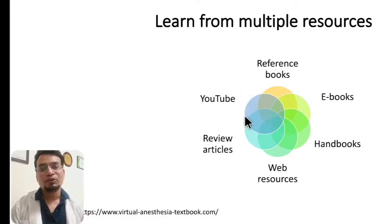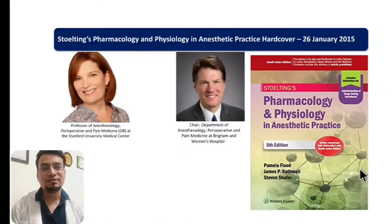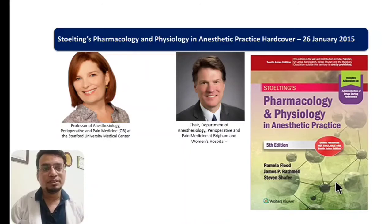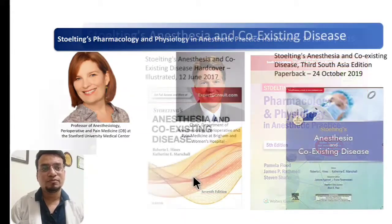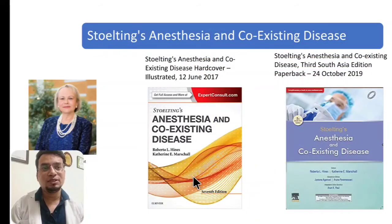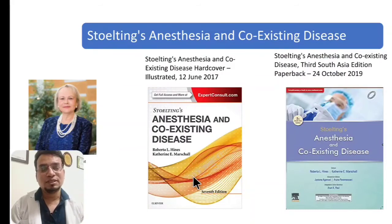For basic sciences, what I read was Stoelting's Pharmacology and Physiology — the last edition came in 2015. It's quite an interesting, small book from which you can read and make notes. Stoelting's Anesthesia and Co-Existing Disease is a standard book read by all anesthesia residents, and you should keep one hard copy with you. It was written by a professor of anesthesiology at Yale School of Medicine.